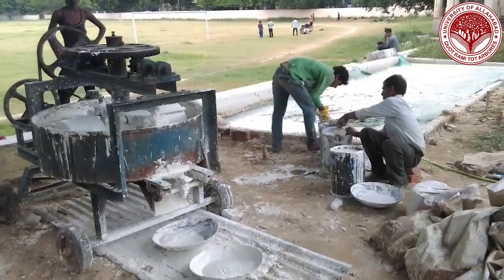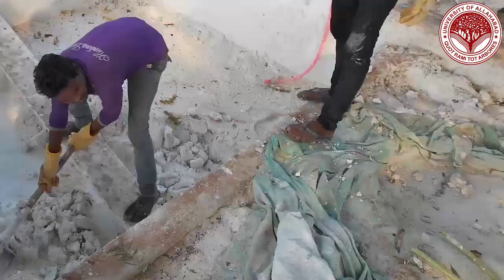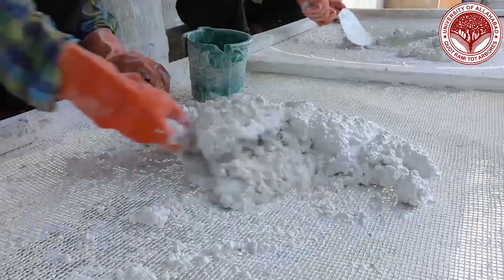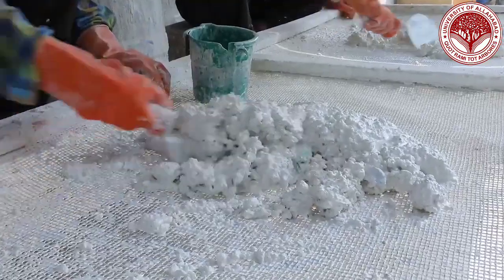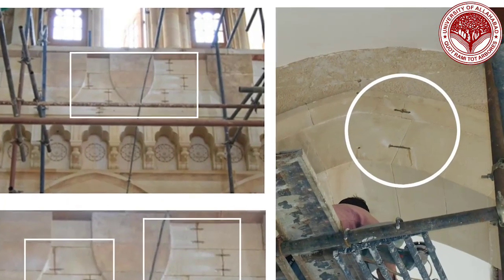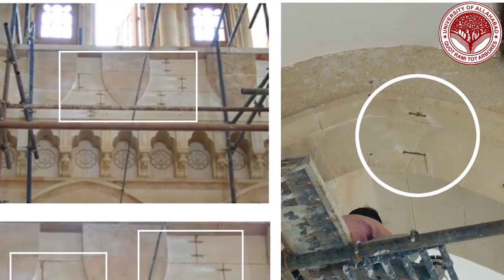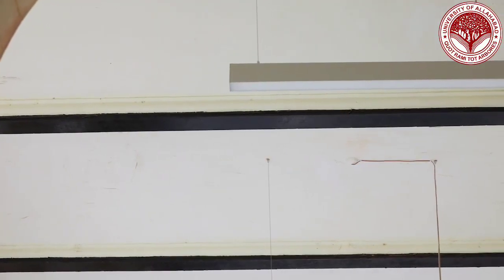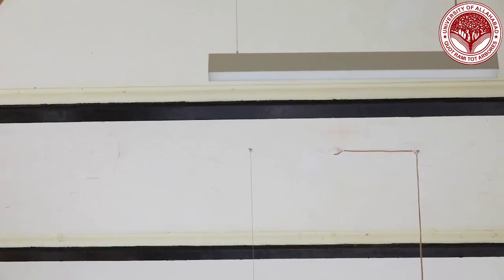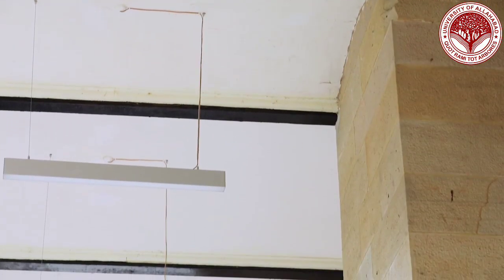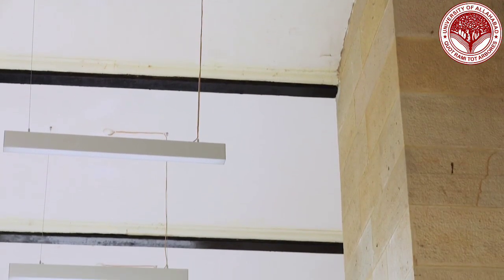Lime was chosen as a material with natural additives for mortar, since it is a traditional and sustainable material. While the structural damages were stitched with the help of stainless steel pins, the jack arcs in the corridor showed rusted sections, for which the retrofitting of the jack arc sections was done by adding MS plate at the base flange of the I-beam.